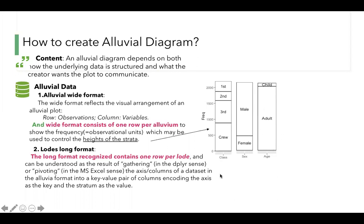Long format contains one row per lode and can be understood as the result of gathering or pivoting. The columns of a dataset in the alluvial format into a key-value pair of columns, encoding the axis as the key and the strata as the value.